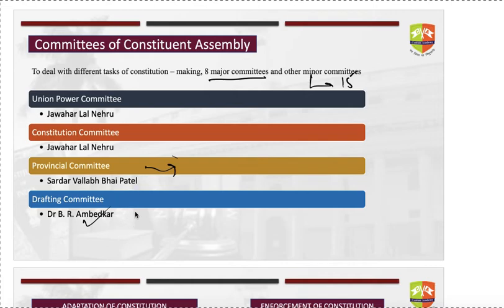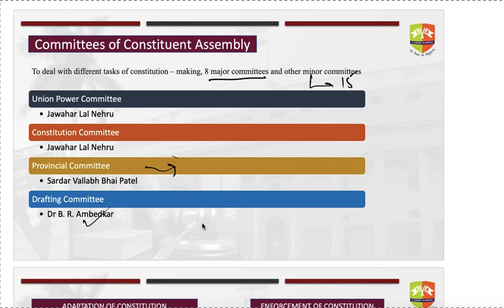The Drafting Committee, the most important committee, was headed by Dr. Bhimrao Ambedkar. It was responsible for drafting the Indian Constitution and studying constitutions from across the world. The Drafting Committee had 7 members: Dr. Bhimrao Ambedkar (Chairman), Mr. Gopalswami Iyengar, Mr. Krishnaswami Iyer, Mr. K.M. Munshi, Mr. Syed Muhammad Sadullah, Mr. Madhwar Rao, and Mr. T.T. Krishnamachari.